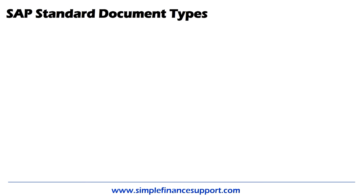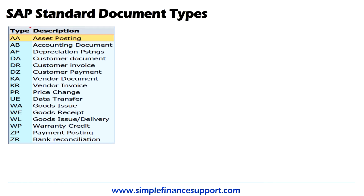Let's look at what SAP standard document types are available. If you look at this short list of SAP-provided document types, you can clearly see there are document types for asset posting, accounting document posting, depreciation, customer invoices, vendor invoices, as well as some document types for goods issues and goods receipts, and so on.